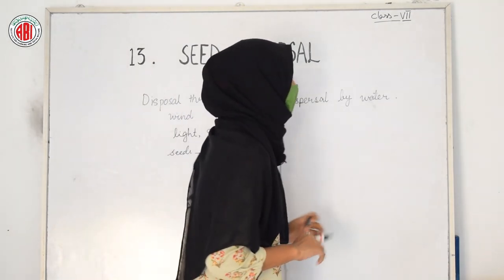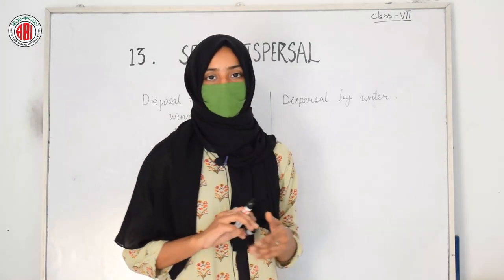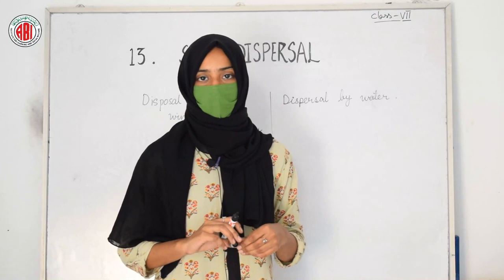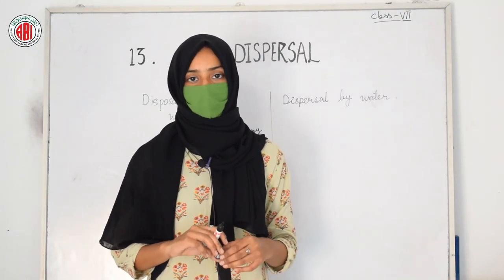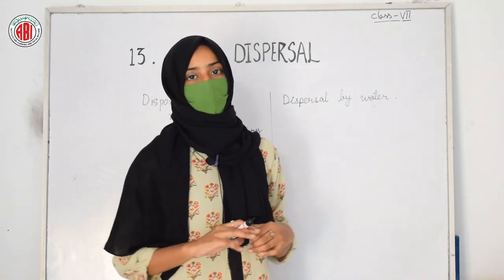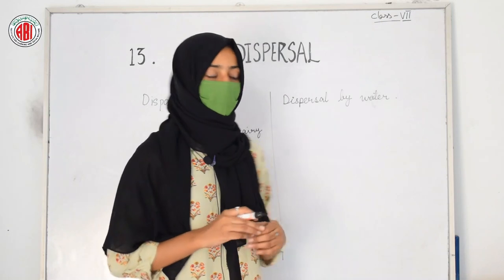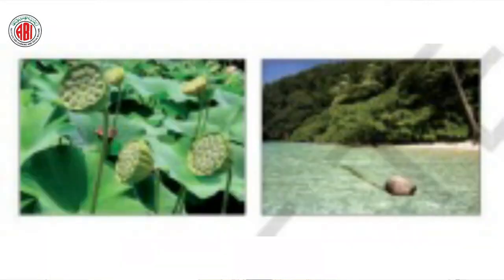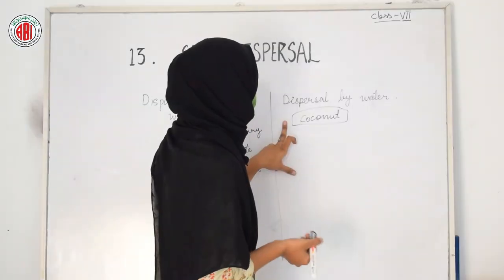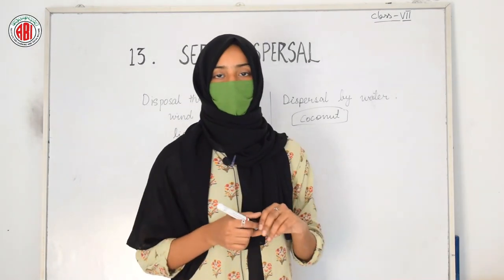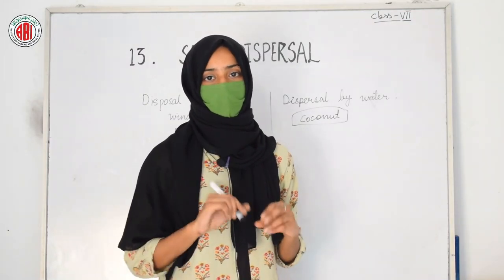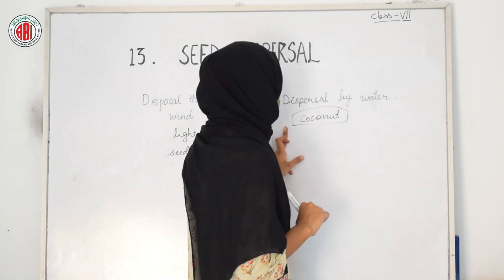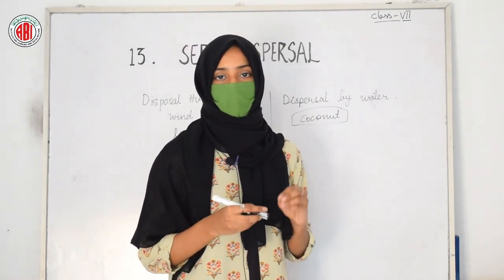The next agent is dispersal by water. Different water bodies — oceans, seas, rivers, ponds, and lakes — contribute to seed dispersal. For example, coconut is a fruit which can float on water. Some other seeds can also float on water, and because of this capacity they can easily move from one place to another. Coconut trees are mostly found near seashores because of the coconut fruit's capacity to float.